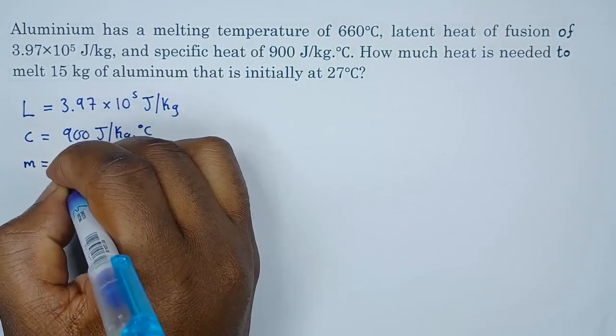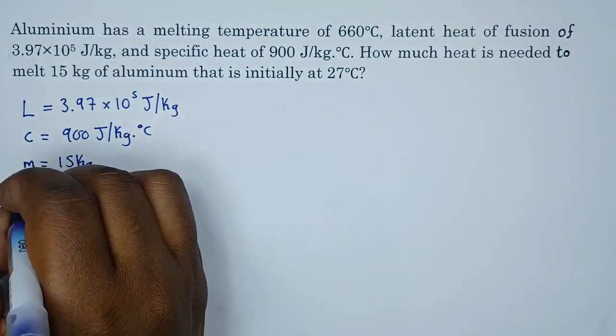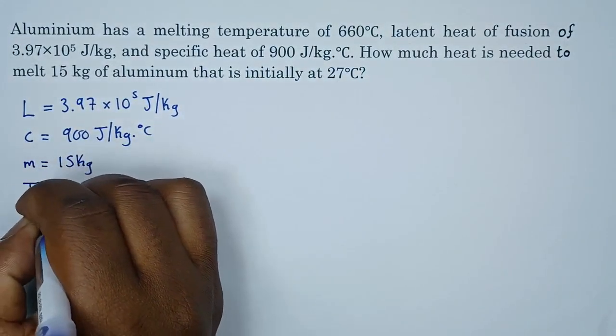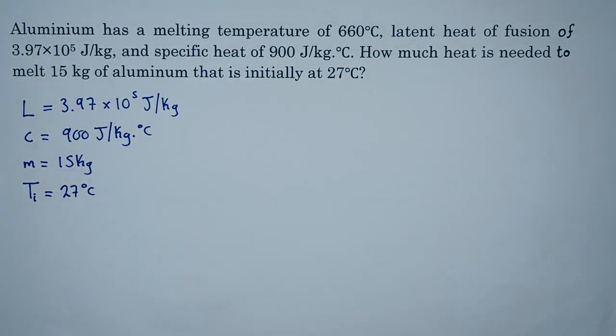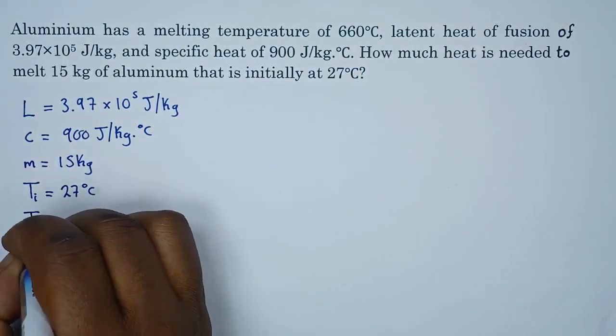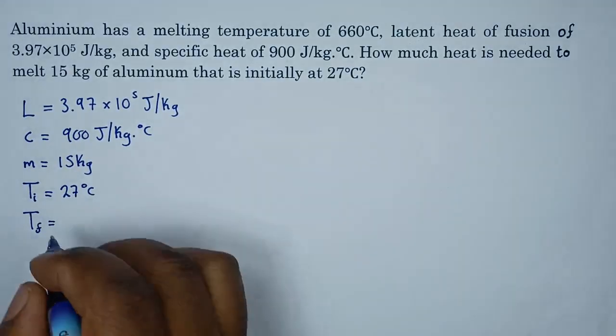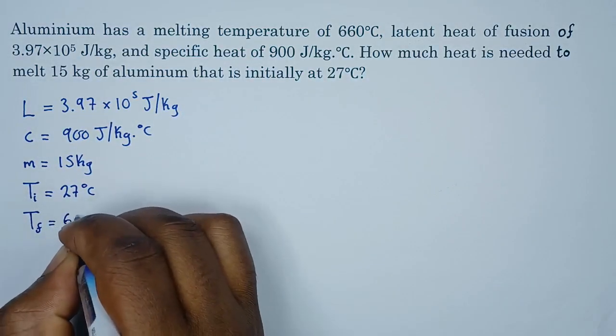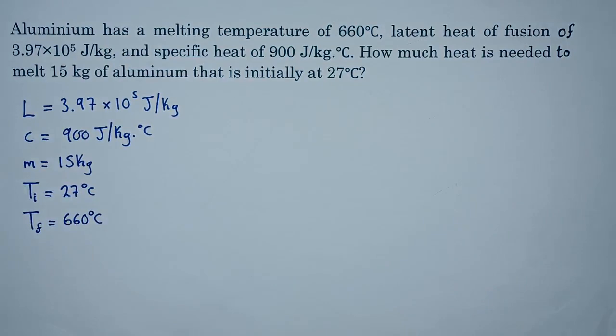We also have the initial temperature, so T initial is 27 degrees Celsius. Lastly, we have the final temperature because remember that's the melting point, which is 660 degrees Celsius.